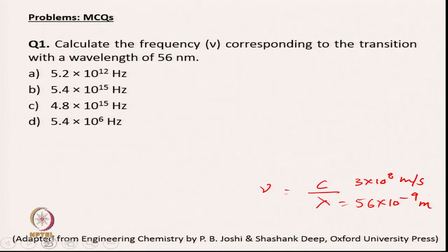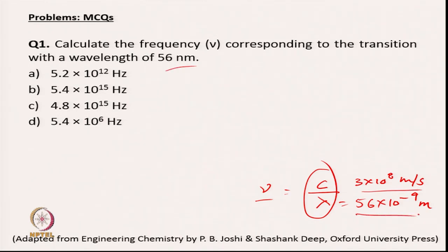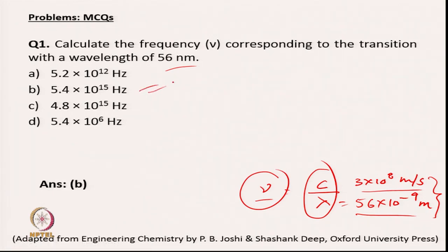The first question asks you to calculate the frequency corresponding to a transition with a wavelength of 56 nanometers. We know that frequency is related to C divided by lambda, where C is the velocity of light and lambda is the wavelength. Lambda is 56 nanometers, which is 56 × 10⁻⁹ meters. Performing the calculation gives a frequency of 5.4 × 10¹⁵ Hz.